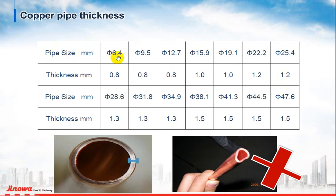For sizes from 6.4 to 12.7mm, select copper pipe thickness of 0.8mm. From 15.9 to 19.1mm, select thickness of 1.0 millimeter. For pipe size 22.2 up to 25.4mm, select 1.2 millimeter thickness. For pipe sizes 28.6, 31.8, and 31.9mm, select thickness of 1.3 millimeter.